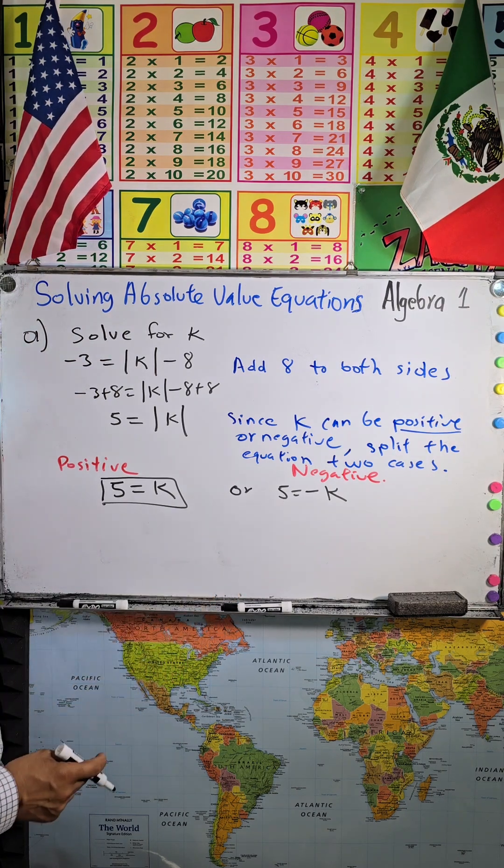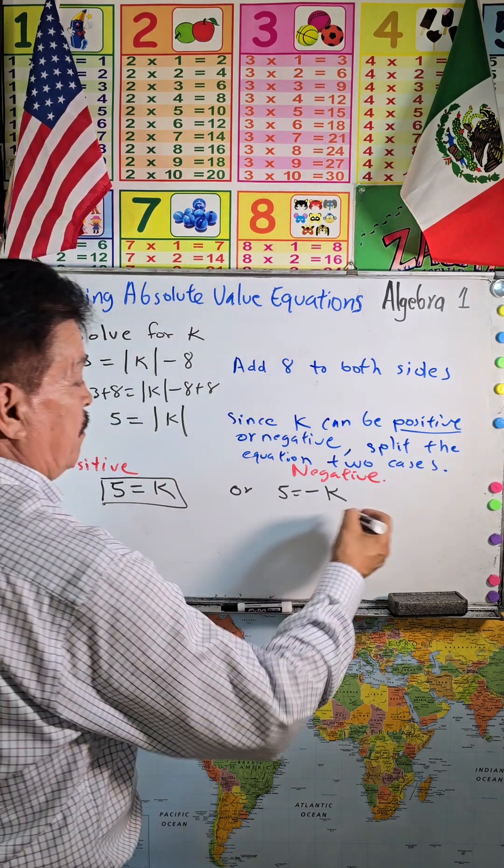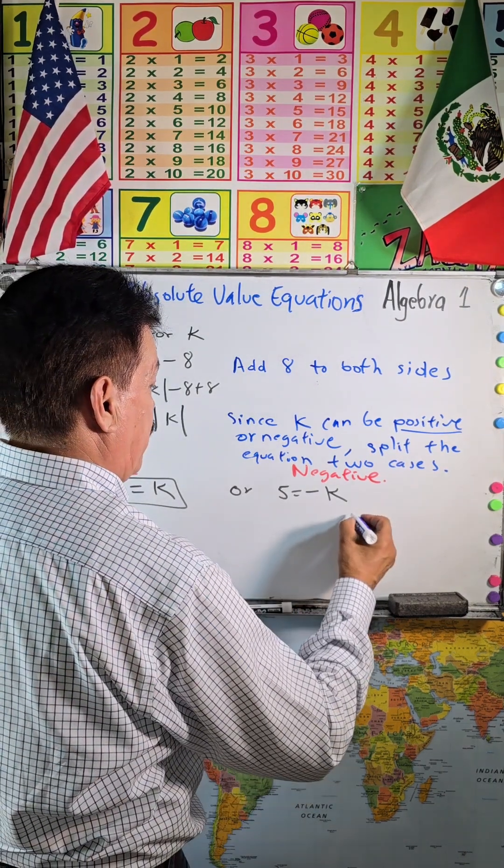We have to multiply both sides by negative 1.